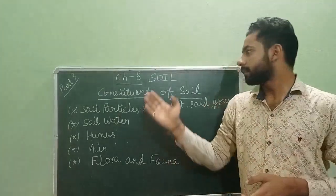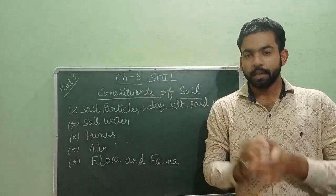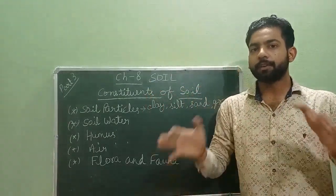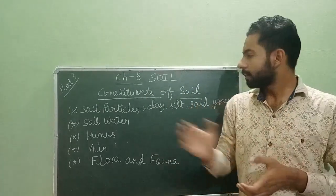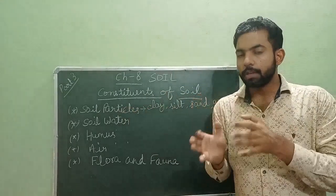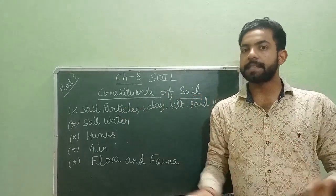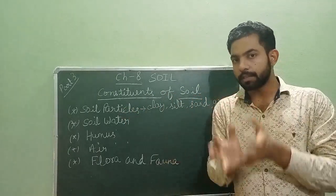Our first topic is constituents of soil. Soil is a mixture of different components which support the growth of plants, such as soil particles. Soil is a mixture of different sized particles. On the basis of their size, it can be mainly divided into four types: clay, silt, sand, and gravel.